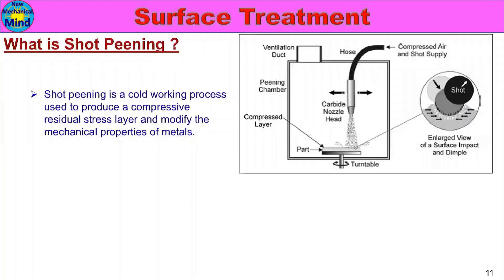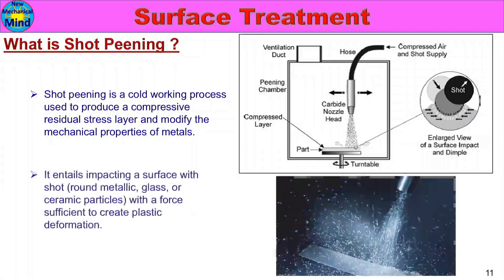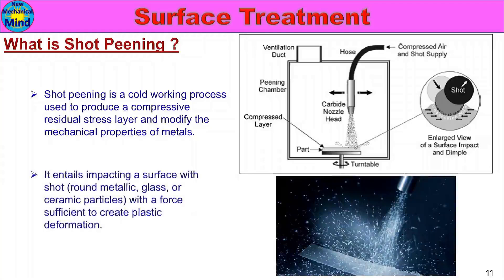This produces a compressive residual stress layer and modifies the mechanical properties of metals. In this process, the top surface compressive residual stress increases and the mechanical properties of metals change. It entails impacting a surface with soft, round, metallic, glass, or ceramic particles with a force sufficient to create plastic deformation.